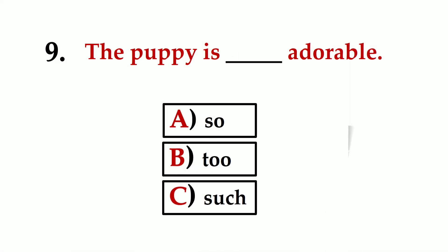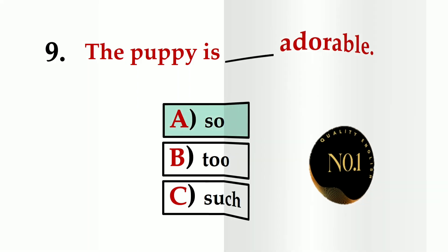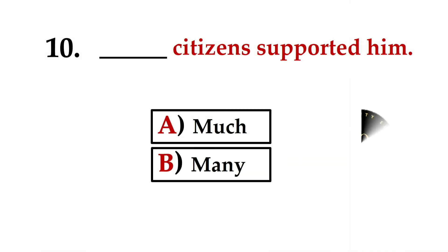Number nine: The puppy is ___ adorable. A) so, B) to, C) such. The correct answer is A) so adorable.